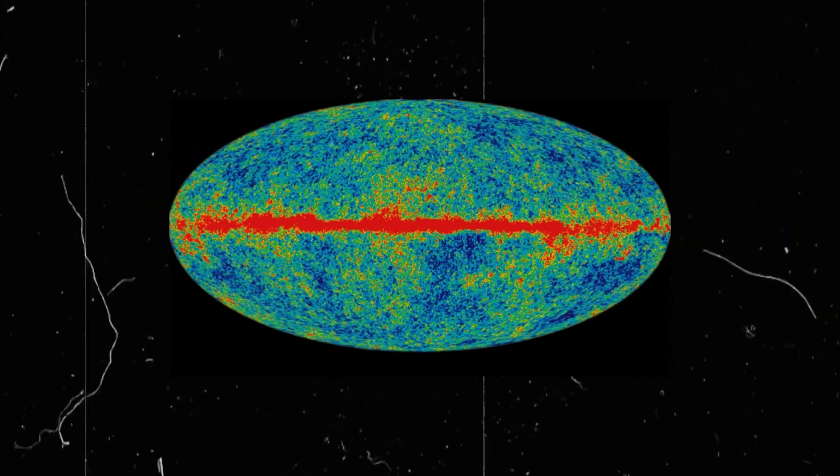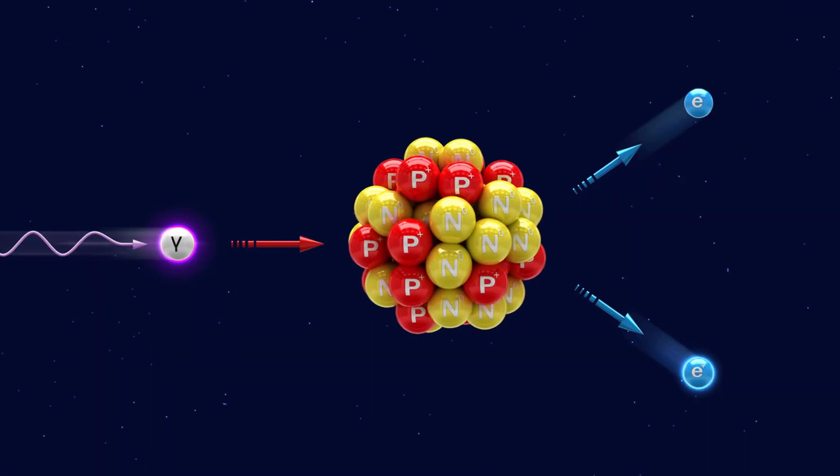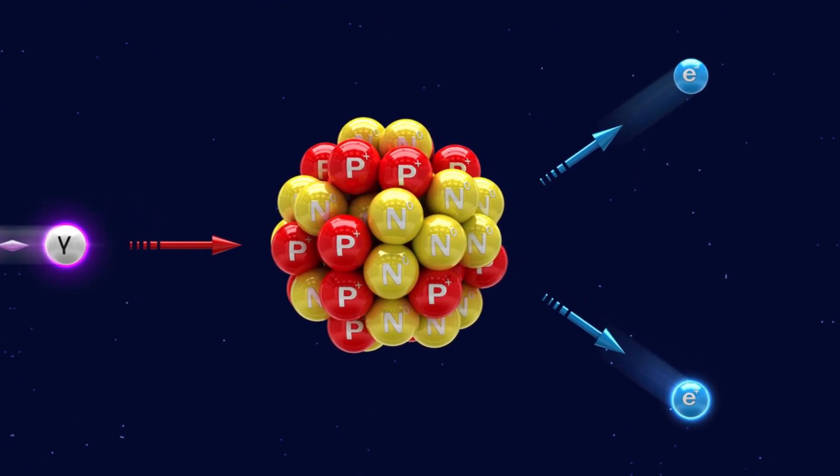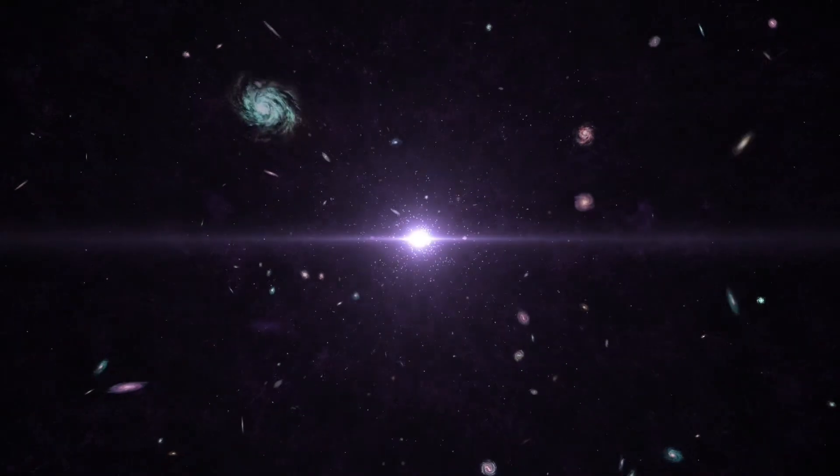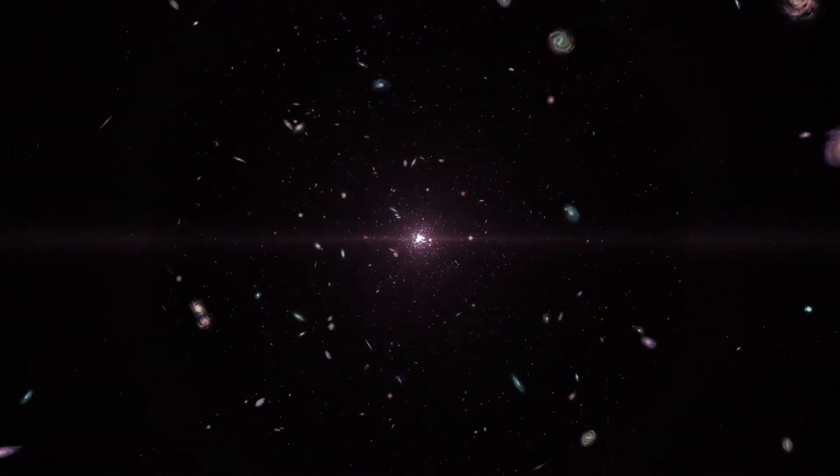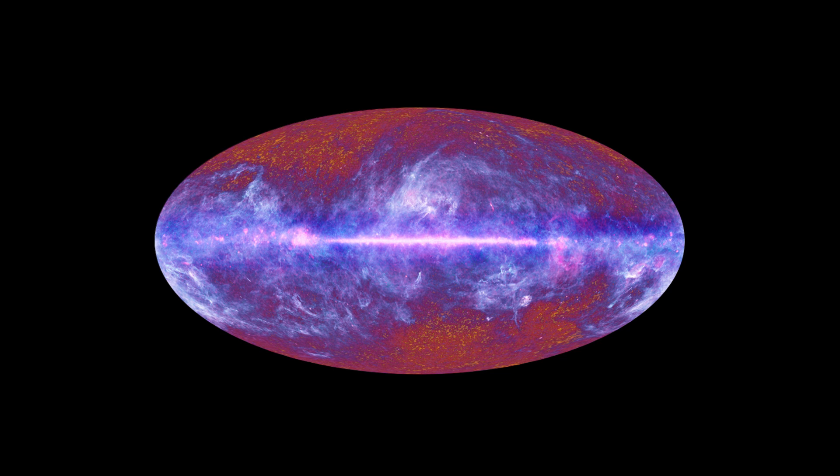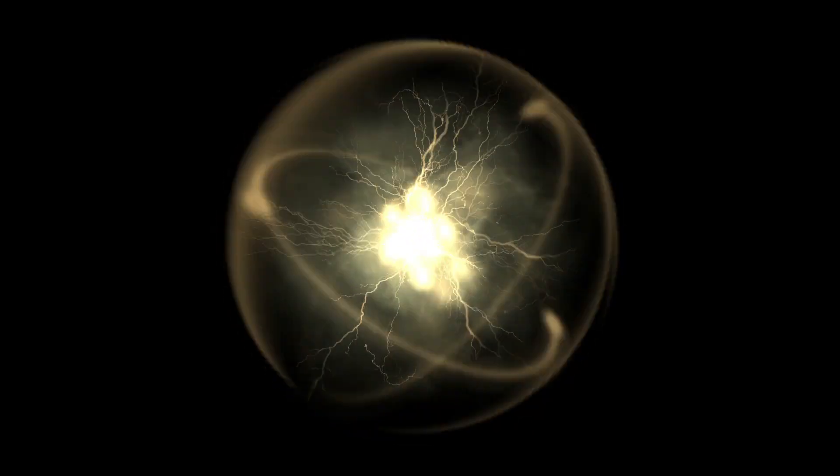The cosmic microwave background radiation that we observe today is a result of the annihilation of particles and antiparticles. Initially, the energy of this radiation was high, but due to the universe's expansion and cooling, it has significantly decreased. Currently, the energy of the cosmic microwave background radiation is tens of thousands of times lower than that of massive elementary particles.